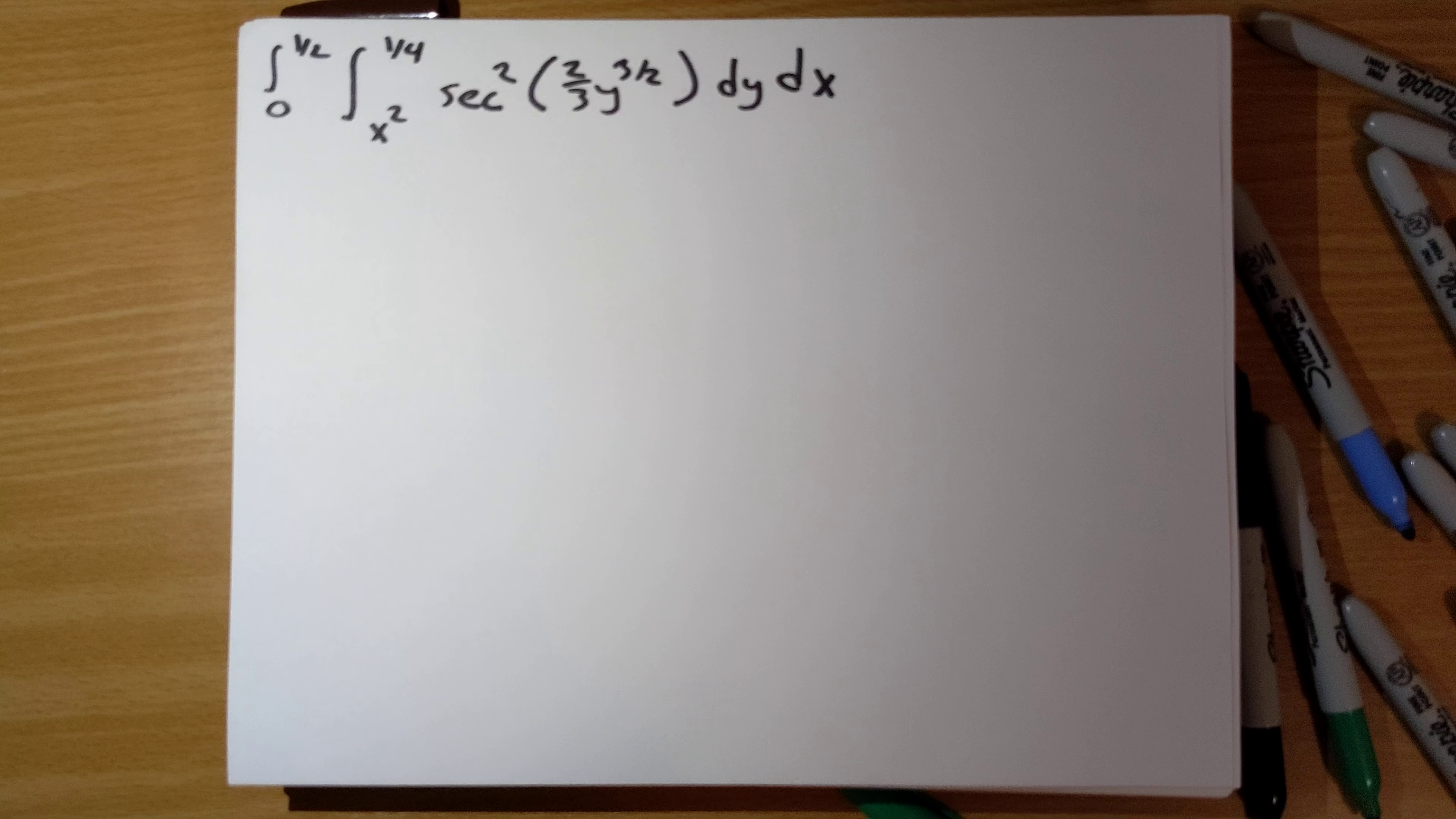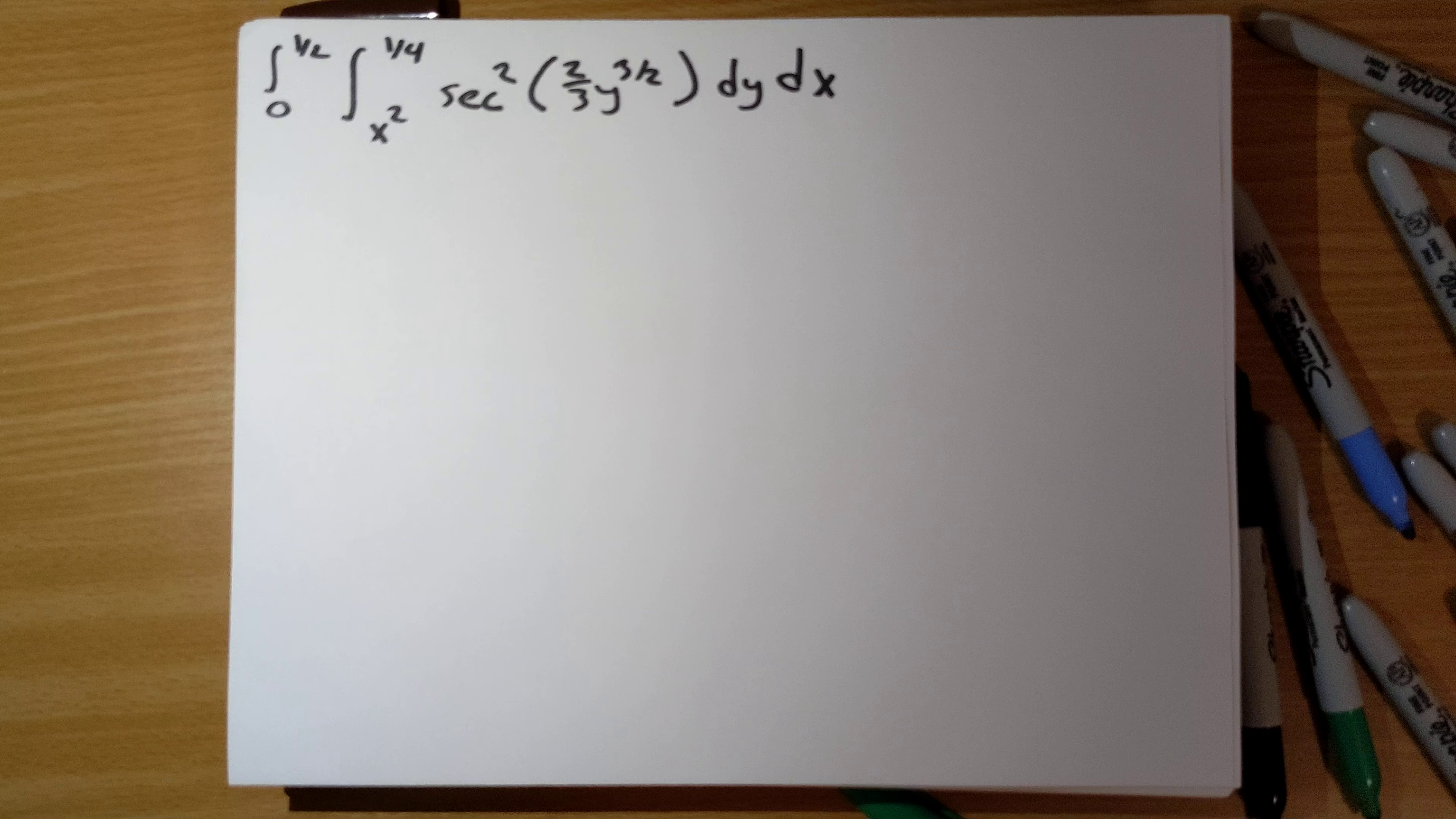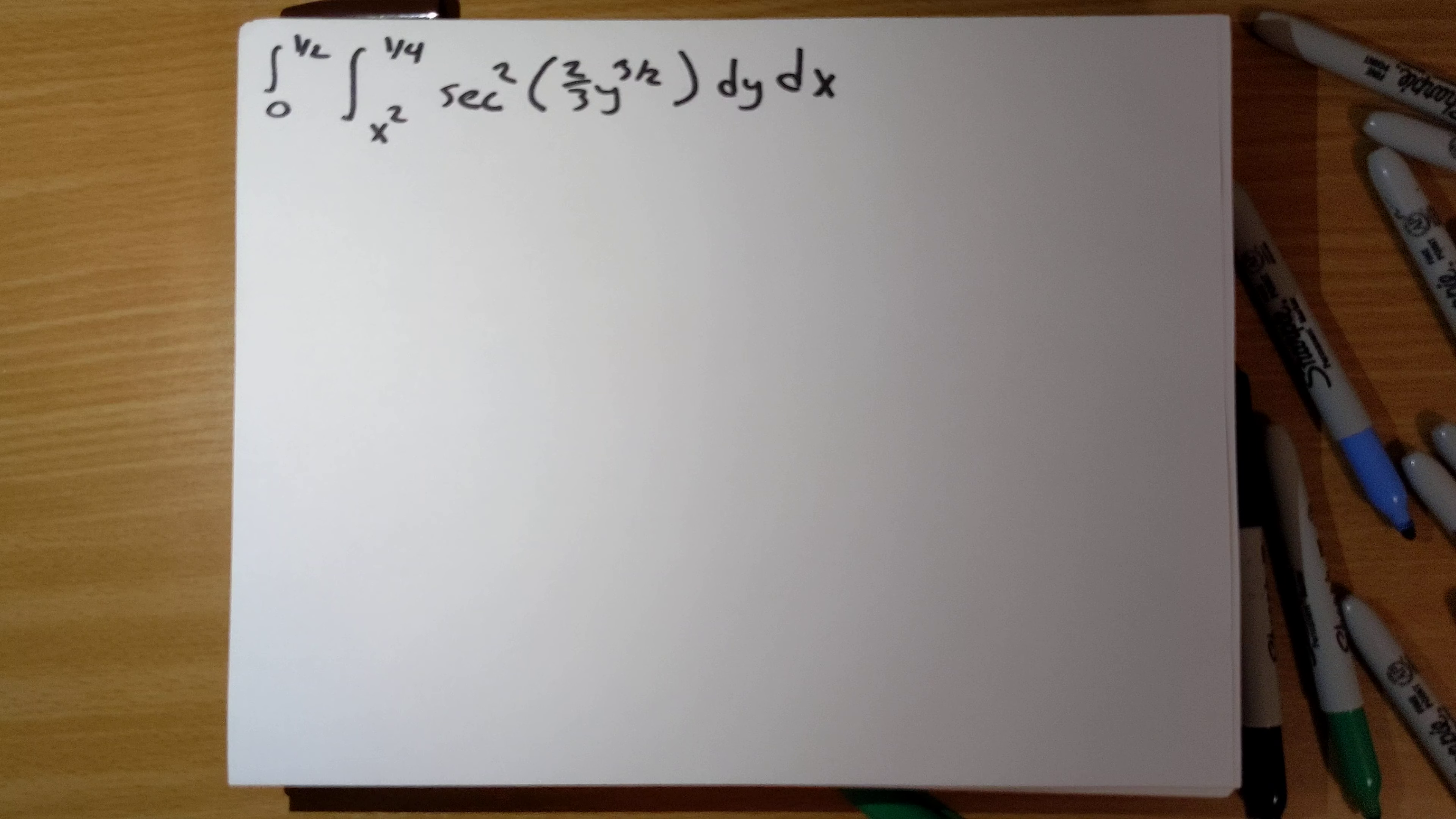Problem 47. Evaluate this double integral. We're being asked to find the antiderivative of secant squared of 2/3 y to the 3/2. That sounds quite difficult to me, so let's change the order of integration.